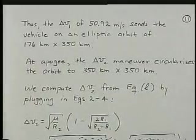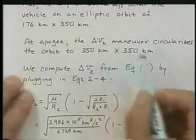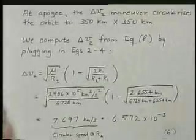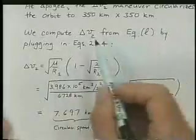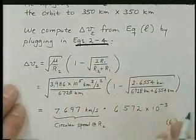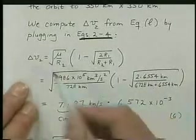When you get to apogee, the delta V maneuver circularizes the orbit into a 350 by 350 kilometer orbit. And we compute that circularizing maneuver from equation V2, from equation L to get delta V2. And using equations 2 through 4, in equation L, we see how we get our result.